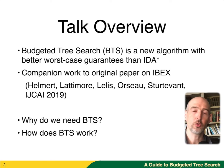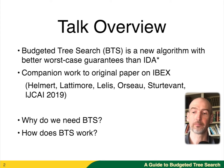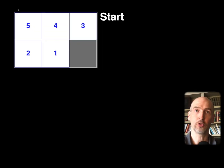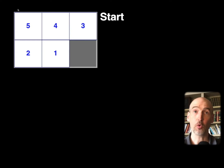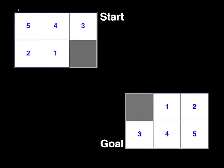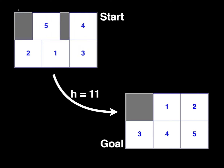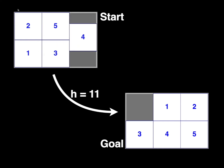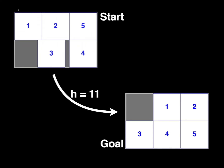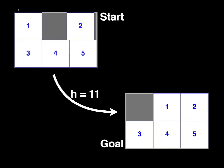We're going to answer two questions today: why do we need budgeted tree search, and how does budgeted tree search work? In order to do that, we're going to look at an example state space, which is the three by two sliding tile puzzle. The goal is that we have a start state, and we want to transform this into the goal state by taking actions one at a time. We have a heuristic that estimates the number of actions to get there, and we're going to try to find the optimal sequence of actions that takes us between the start and the goal.